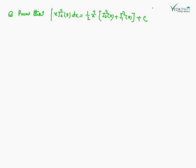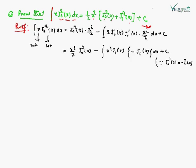Now we are going to take another example based on Bessel functions. We need to prove that ∫x·J₀²(x) dx = (1/2)·x²·[J₀²(x) + J₁²(x)] + C. So, on the left side we have the integration of x·J₀²(x) dx, where we apply integration by parts taking x as the second function and J₀²(x) as the first function.